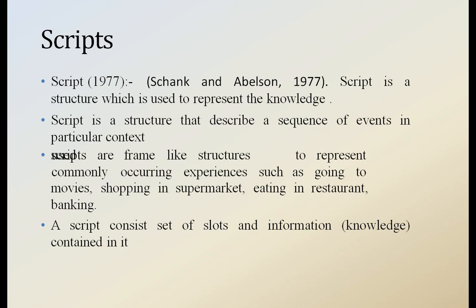Previously, with conceptual dependency, we described a certain event in a particular context. Coming to scripts, it describes a continuous sequence of events regarding one particular context. Scripts are frame-like structures that represent events commonly occurring in a given situation or context — such as going to the movies, shopping in a market, going to a restaurant to eat, or going to a bank to deposit or withdraw money. These contexts involve multiple events, not just a single one.